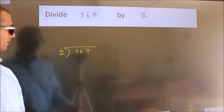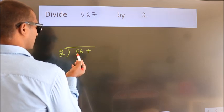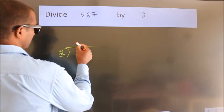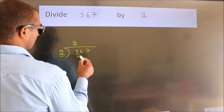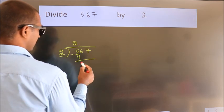Next, here we have 5, here 2. A number close to 5 in the 2 table is 2 times 2, which is 4. Now we should subtract. We get 1.